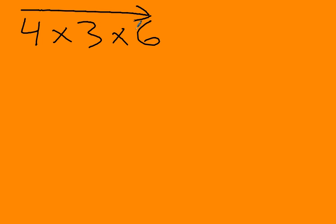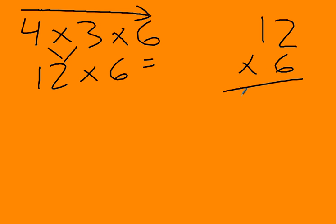So we go 4 times 3 equals 12, times 6, then I can come over here and go 12 times 6. 6 times 2 is 12, 6 times 1 is 6, plus 1 is 7, and that's 72.